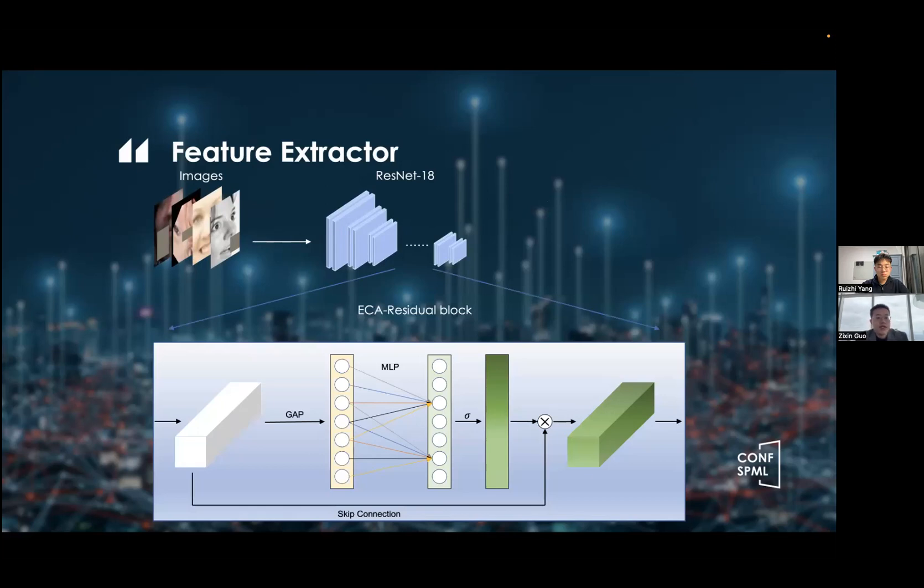However, the ResNet-18 in our paper is a little bit different. It contains the ECA residual block. So ECA is a short name for efficient channel attention, which significantly improves performance. Effective cross-channel interaction may sustain performance while drastically lowering model complexity. The 1D convolution is effectively used to perform the local cross-channel interaction. So the method does not require any dimensionality reduction. The technique for adaptively selecting the size of a 1D convolution kernel is also included in the ECA to assess the extent of the local cross-channel interaction. And the module will finally produce the extracted features as the output.